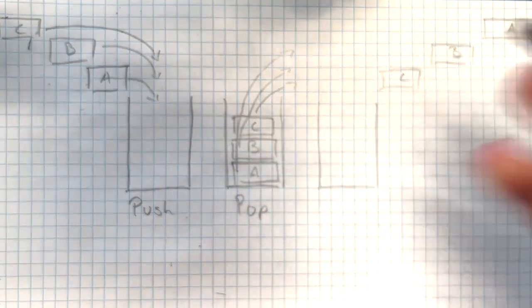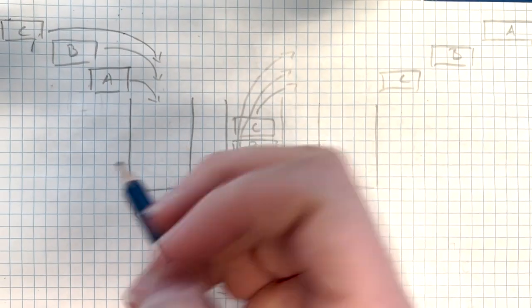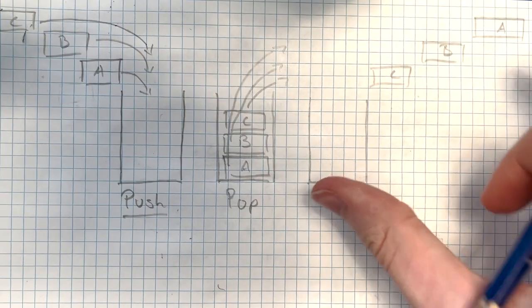So I've drawn out an example here. If you add in the order A, B, then C, and that's called a push operation when you add to the stack,